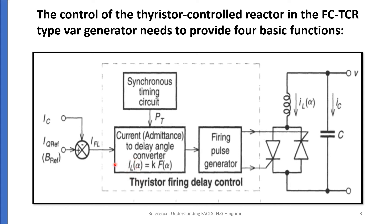This current we get from the FCTCR — it tells us the capacitive current and the required reactive reference current. This current minus that current gives us the fundamental current required for TCR operation, which gives us the alpha requirement. This is then given by the firing pulse generator to the TCR.